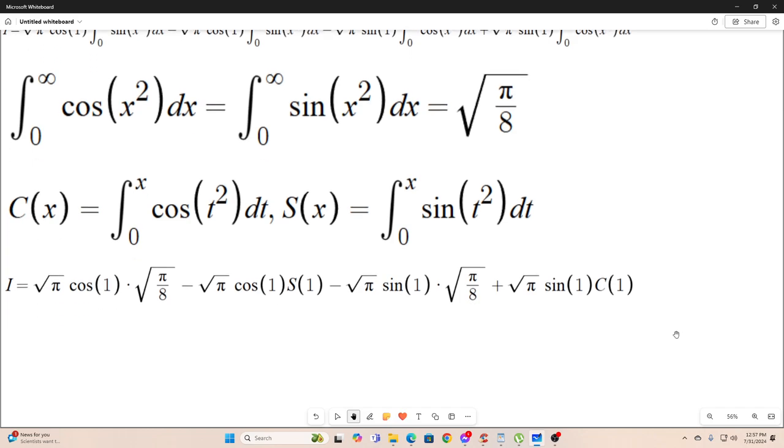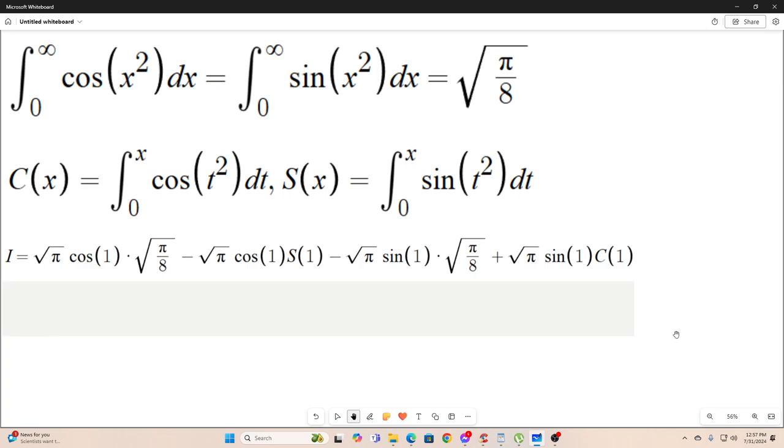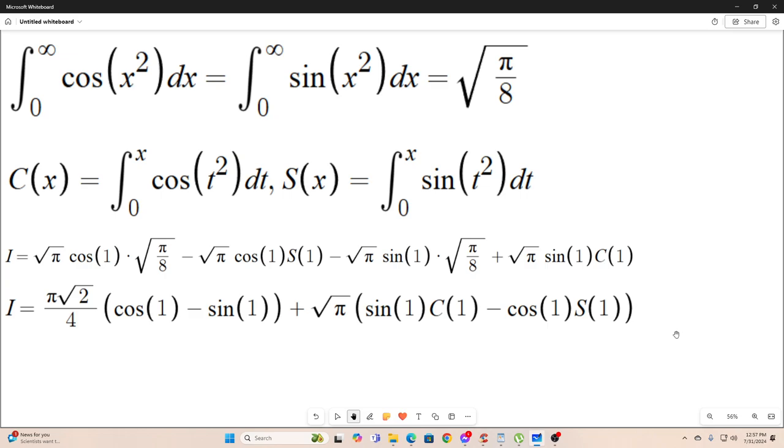All right. So this is our final answer. And it's not, like, it's not the most satisfying thing in the world, but the cosine and sine Fresnel integrals are legit functions in mathematics, especially physics, and probably statistics also. So this is a legit answer. And I believe it's equal to something like 0.72 or something like that. So anyway, that's the answer. I hope you guys enjoyed that, and we'll see you next time.